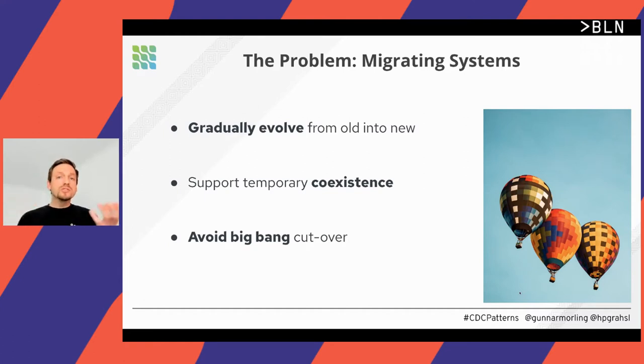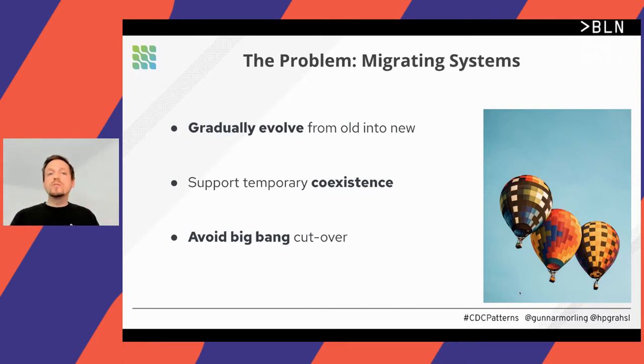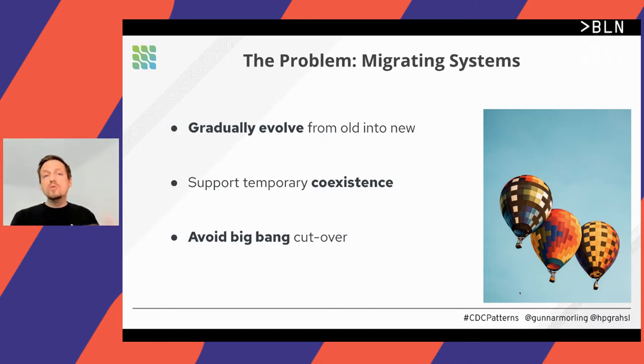Very rarely is it a good idea to try and do this migration in one big chunk. Writing everything in your microservice stack and then attempting a hard cutover approach is often doomed to failure. Instead, we should do it in the strangler fig way — smoothly and gradually evolving the old system into the newer architecture.